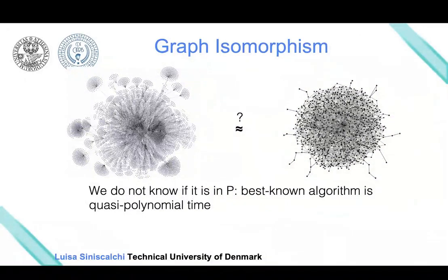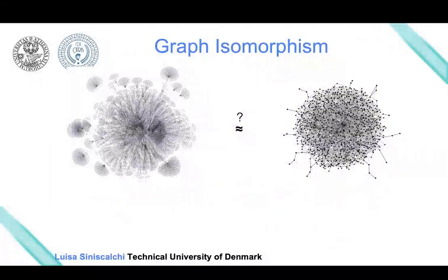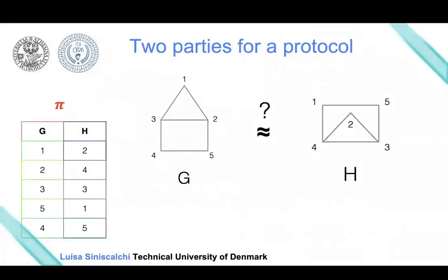Let's reflect and go back to the previous example. Given the permutation, checking whether these two graphs are isomorphic would take polynomial time, because we just need to apply the permutation and check the adjacency between the nodes.